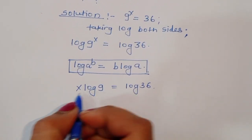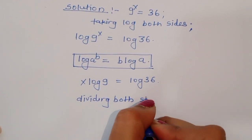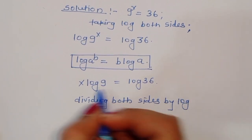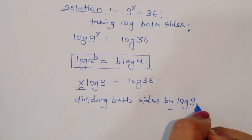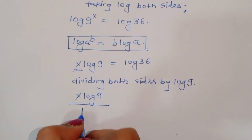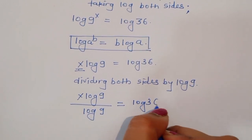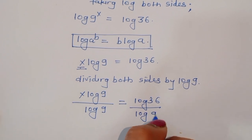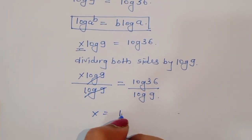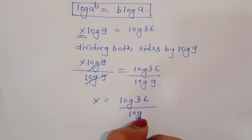Now, dividing both sides by log of 9, because we have to find out the value of x. Then we will get x log of 9 divided by log of 9 is equal to log of 36 divided by log of 9. The log of 9 cancels, so x is equal to log of 36 divided by log of 9.